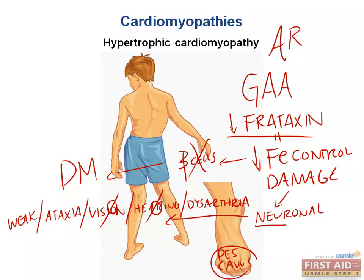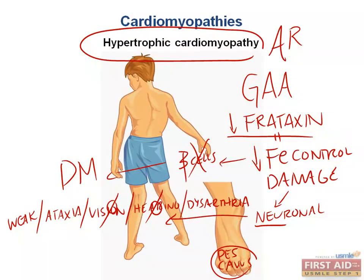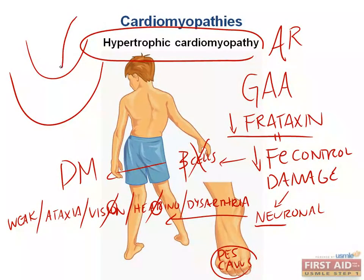Another super high-yield association with Friedreich's ataxia is the heart. Friedreich's ataxia patients will often have — by often meaning 90% — hypertrophic cardiomyopathy. On physical exam, blood trying to empty into this highly non-compliant left ventricle — as muscular as a brick wall — produces your classic S4 heart sound, caused by blood hitting a highly non-compliant thick ventricle.